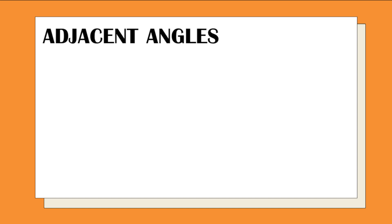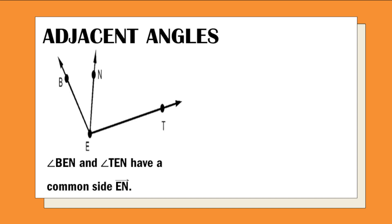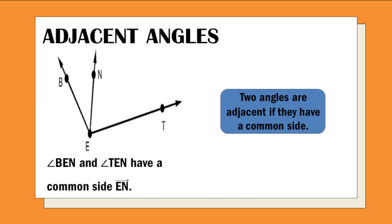Another pair of angles is adjacent angles. Angle BEN and angle TEN have a common side which is Ray EN. So BEN and TEN share the common side Ray EN. Two angles are adjacent if they have a common side, and those two angles are called adjacent angles.